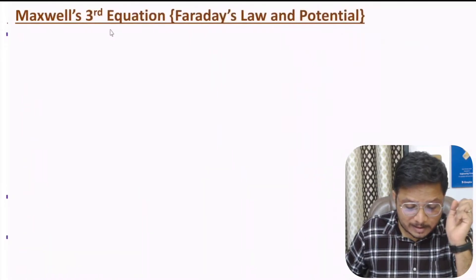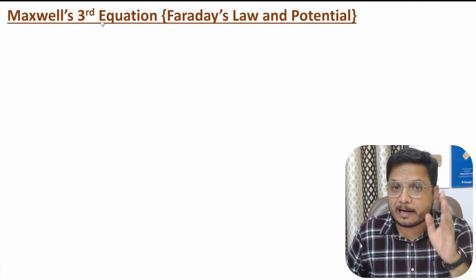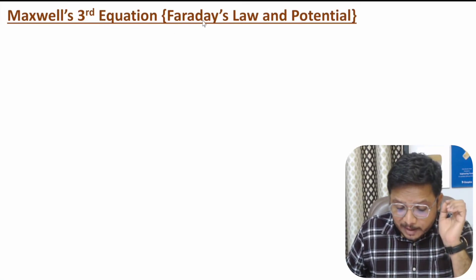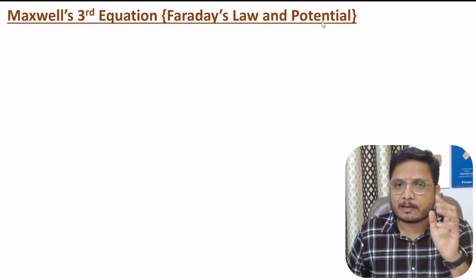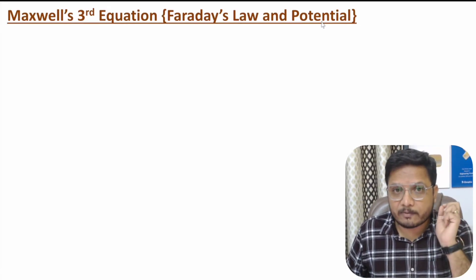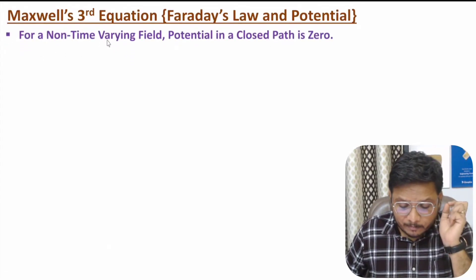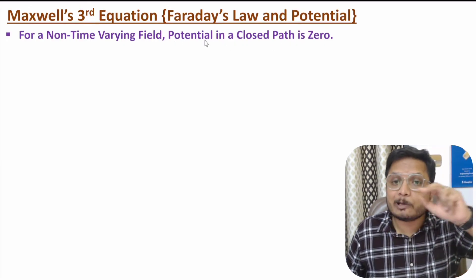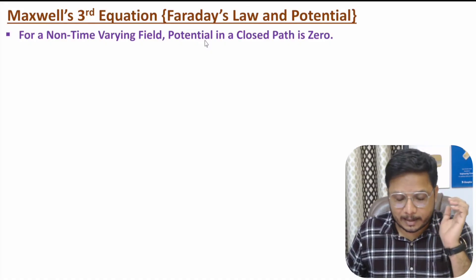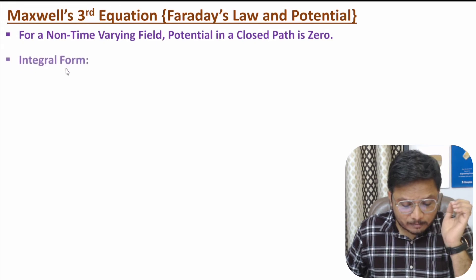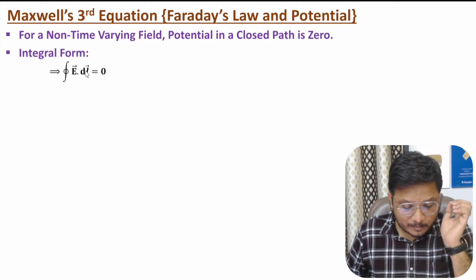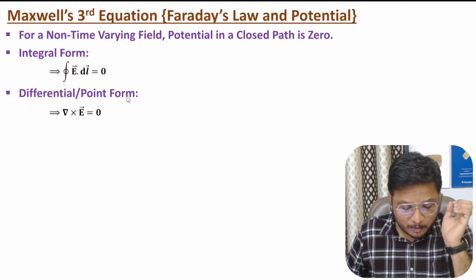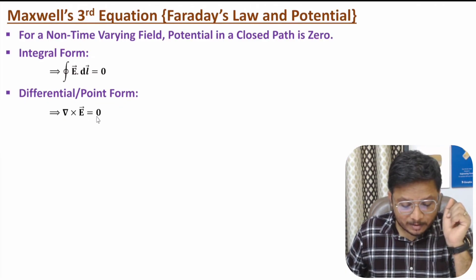Maxwell's third equation is applicable to both time varying and non-time varying fields, based on Faraday's law and the definition of potential. For non-time varying field, the potential in a closed path is zero. Potential is defined as the line integration of the electric field. For a closed path, it is zero. In differential form, or point form, the curl of the electric field is zero. So this is Maxwell's third equation for non-time varying field.